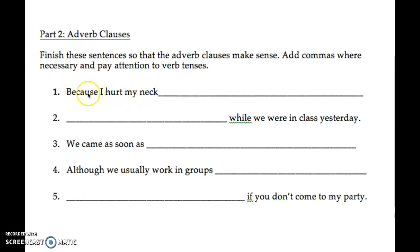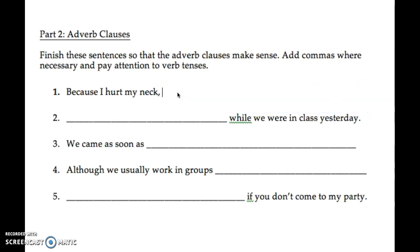So: 'because I hurt my neck.' Here we have our dependent clause first, so I know I'm going to put a comma. And now I have to start the independent clause with a subject and a verb. 'Because' signals a cause, so what's the result? Something like 'I couldn't go to work.' Note that you can't write the word 'so' there — that would be too many conjunctions.